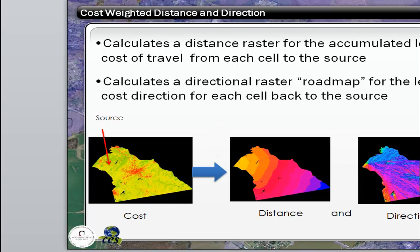The cost-weighted distance and direction tool basically calculates the distance raster from the source, and you can see this in that little diagram here. It also calculates a directional raster roadmap for the least cost direction for each cell back to the source. This actually heavily influences the determination of the final travel path.